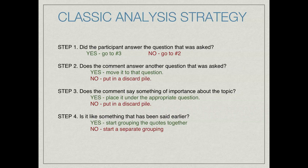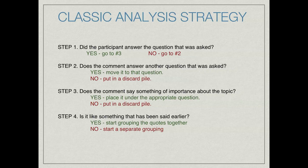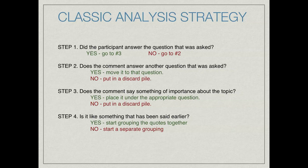We start with the first question that was asked in the focus group. As you compile all the data from your first question and look through all the responses, pick up a particular response and ask yourself: did this participant answer the question that was asked? If yes, you skip to step three. If they didn't answer your question, move to step two: does the comment answer another question that was asked? If it does answer another question — maybe they jumped ahead — just move that comment to the question it relates to.